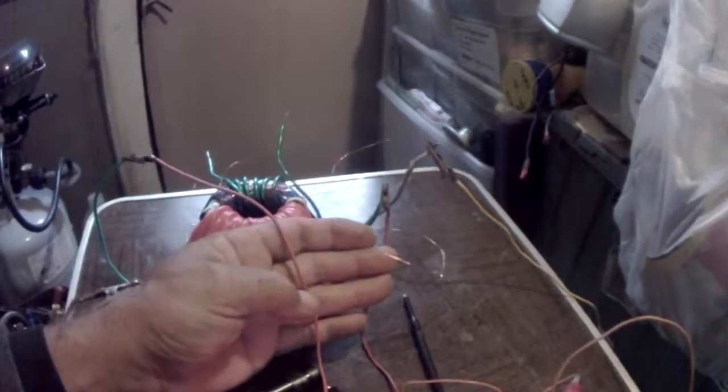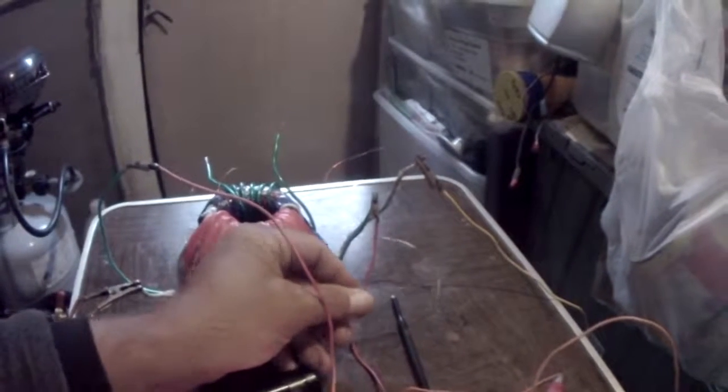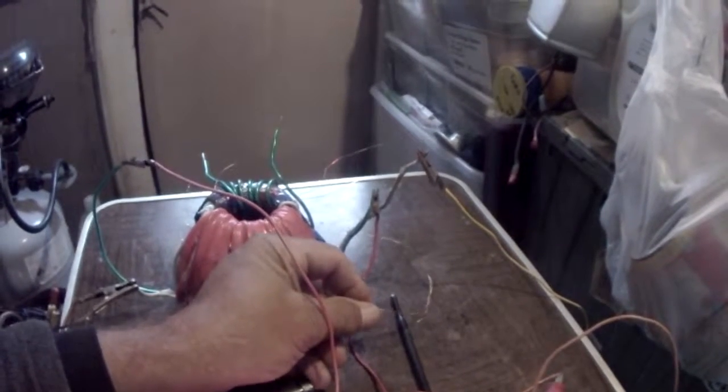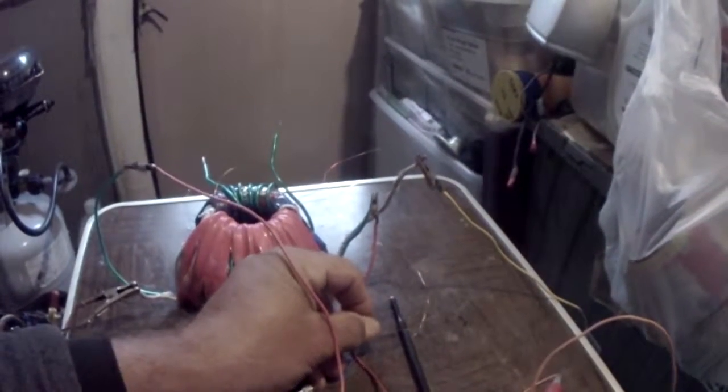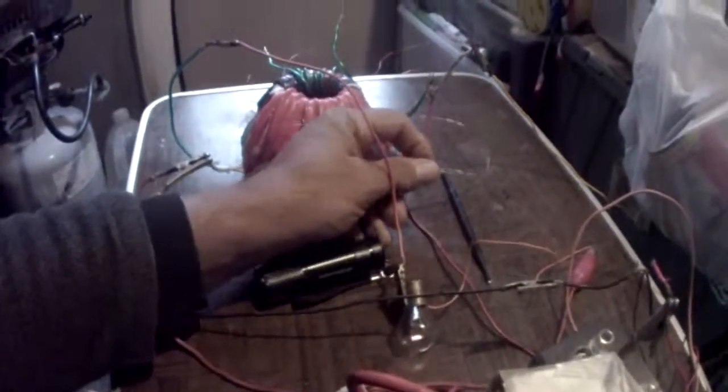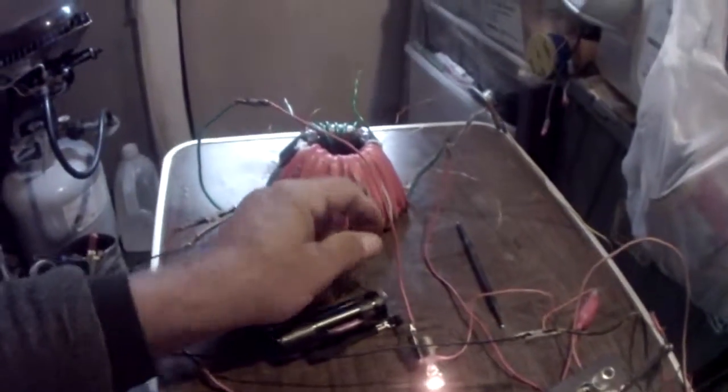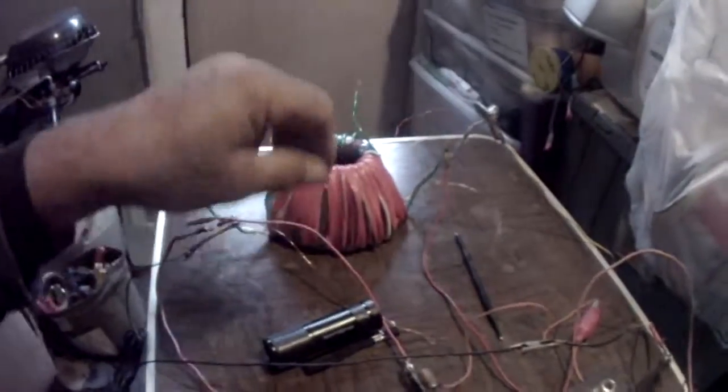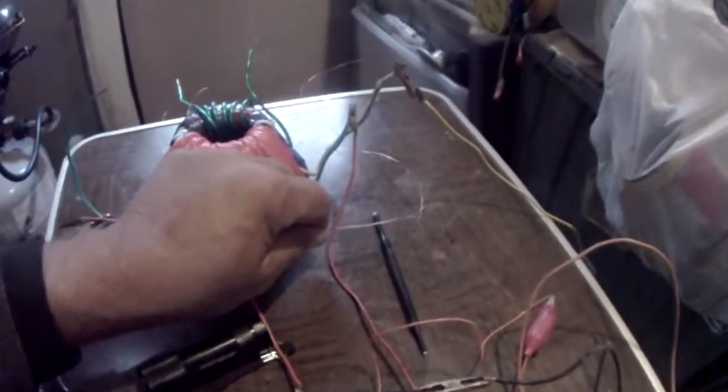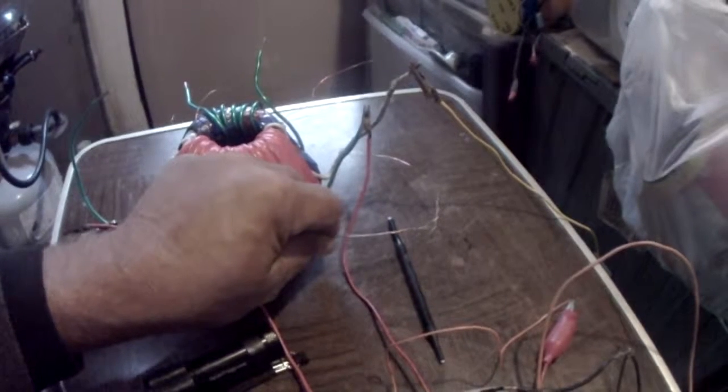You see when I put it on there, the lamp dims a little bit. Matter of fact, it takes it right out. And if I disconnect the lamp, I think that high voltage comes back. Yep, you can see the sparks there.